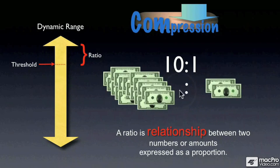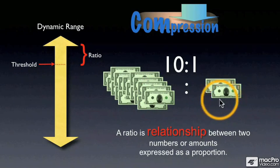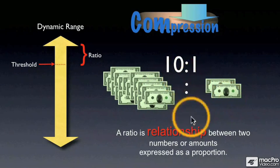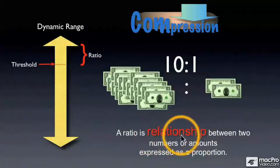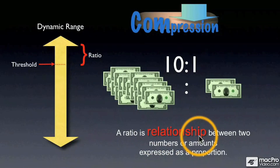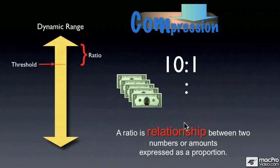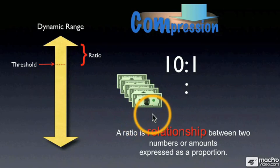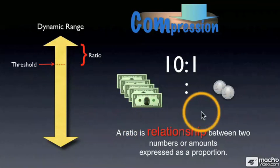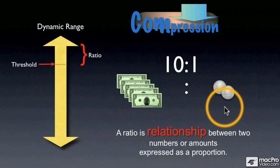So what happens if the record company makes $20? How much money do you get? A measly two bucks. I guess that's why everybody's self-publishing these days. Let's say the next quarter the record company doesn't do so well — it only makes $5. Well, at a ratio of 10 to one, $5 becomes a half a dollar.